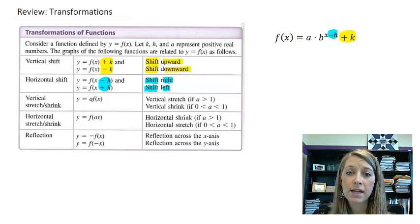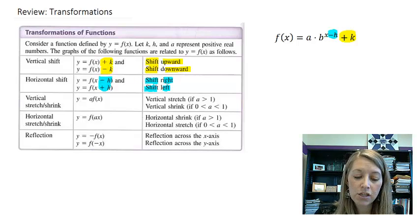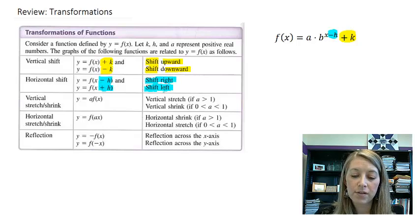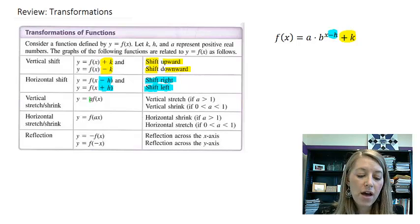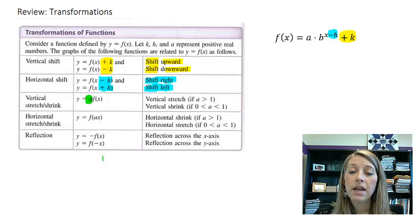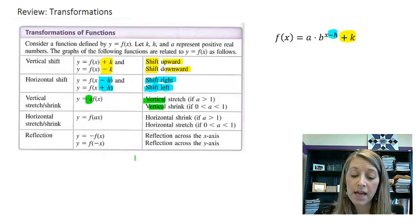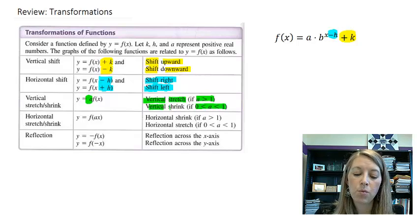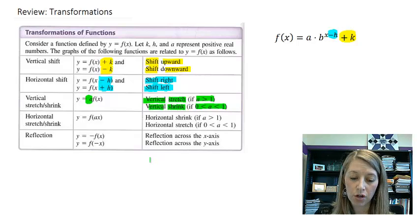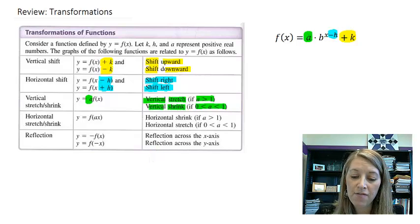Remember, the inside is always backwards of what you think. So if you're subtracting h, you shift it right. If you're adding h, you shift it left. If you have something multiplied on the outside of the function, then it is still vertical, vertical as outside. And if your number is greater than 1, it's going to make it bigger vertically. And if your number is between 0 and 1, it's going to make it shrink vertically. So that's what this a value would do.